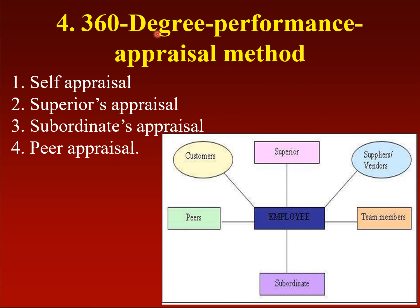The fourth modern method is the 360-degree performance appraisal. The employee is evaluated by his superior, by suppliers, by team members, by subordinates, by peers, and by customers — from six different directions — in addition to self-appraisal. The four essential components of this system are self-appraisal, superior appraisal, subordinate appraisal, and peer appraisal. Additionally, there can be appraisal by customers, suppliers, and team members.